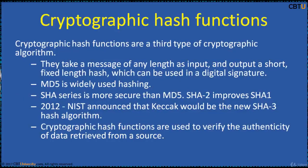Cryptographic hash functions are a third type of cryptographic algorithm. They take a message of any length as input and output a short, fixed-length hash, which can be used in a digital signature. MD5 is a strengthened variant of MD4 and is widely used for hashing. SHA (Secure Hash Algorithm) is more secure than MD5. SHA-2 is an improvement over SHA-1. In 2012, NIST announced the SHA-3 algorithm, also known as Keccak. Cryptographic hash functions are used to verify the authenticity of data retrieved from a source.